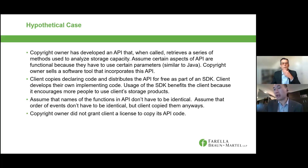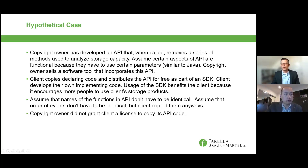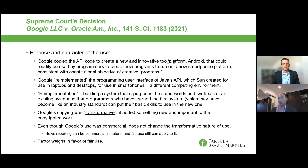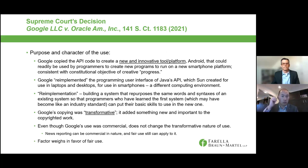The first factor is purpose and character of the use. Justice Thomas noted in his dissent that precedent had shown this is supposed to be the second most important factor, after the effect on the potential market — suggesting the majority improperly weighted the factors by starting here. Nonetheless, the majority tackled the question from the perspective of whether what Google did was transformative — whether it added something new and innovative that hadn't been done before — and how that relates to the constitutional mandate of developing more creative works.